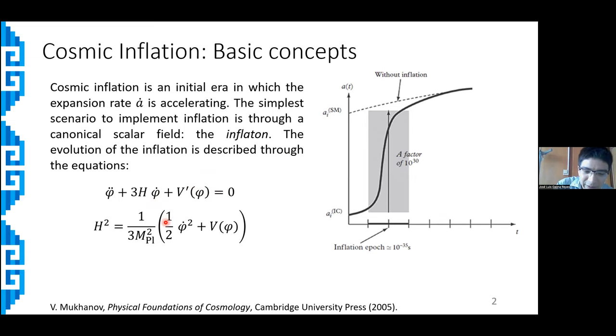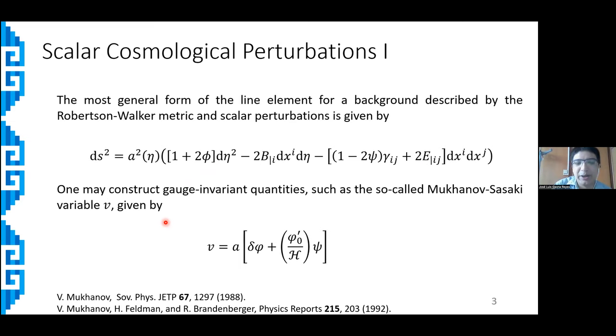Now, inflation also has the virtue of allowing us to describe the emergence of structure in the universe. In order to do this, one considers a background metric, which is the Robertson-Walker metric, and then we introduce perturbations. One can see that the most general form of the line element, once we consider only scalar perturbations, which will be enough for our purposes, is given by this expression in which these functions φ, b, e, and ψ are just four scalar functions which can be used to